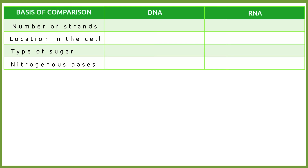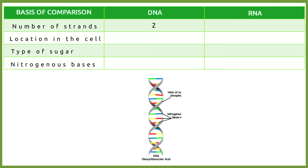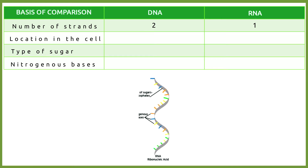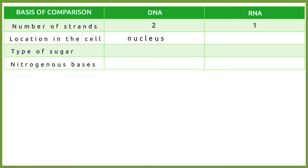Let's reveal the answers. For DNA, there are two strands, while in RNA there is only one strand. DNA is located in the nucleus of the cell, while RNA is found in the cytoplasm. The type of sugar for DNA is deoxyribose, and in RNA the sugar is ribose.